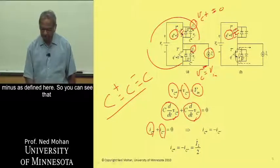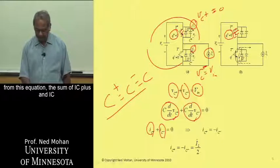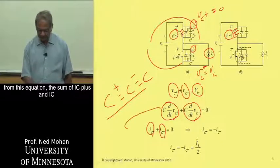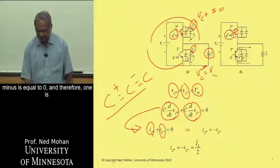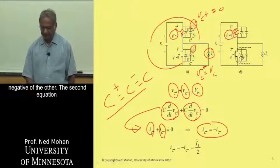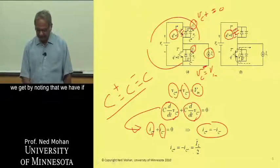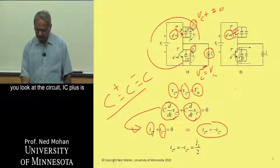So you can see that from this equation, the sum of IC plus and IC minus is equal to zero, and therefore one is negative of the other. The second equation we get by noting that we have, if you look at the circuit,